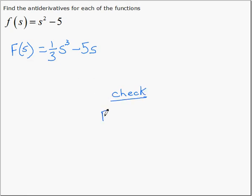By taking the derivative of what we believe is the antiderivative. 3 times a third is 1, so that just becomes s squared. Derivative of negative 5s is negative 5. So, our answers are the same, so this is the antiderivative.